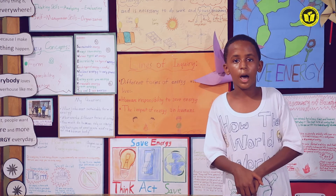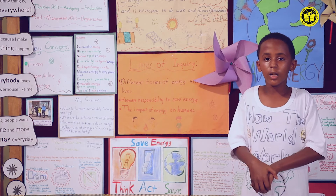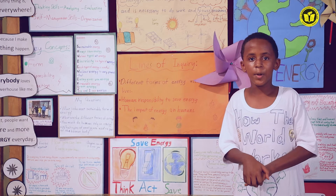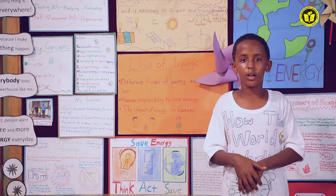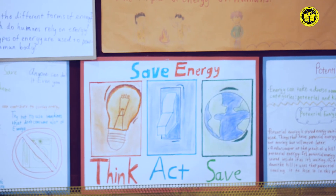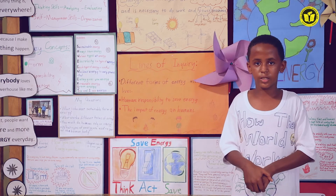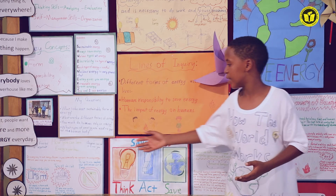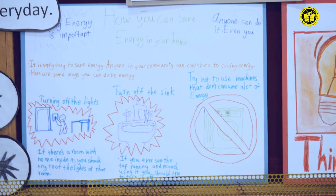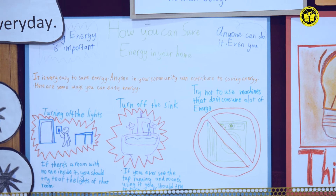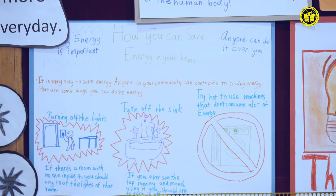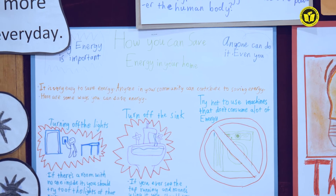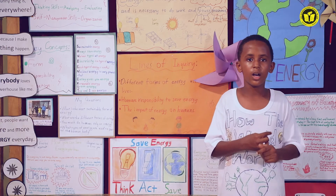Now let me talk to you about saving energy. We all need to save energy, and the reason is that saving energy is important because we need it for future generations. If we constantly keep on using energy and wasting it, then there will be none left for future generations. That's why we should all take our part. Some ways you can help save energy: try to turn off the lights, turn off the sink if no one is using it, and try not to use machines that consume lots of energy, like the dryer or iron.